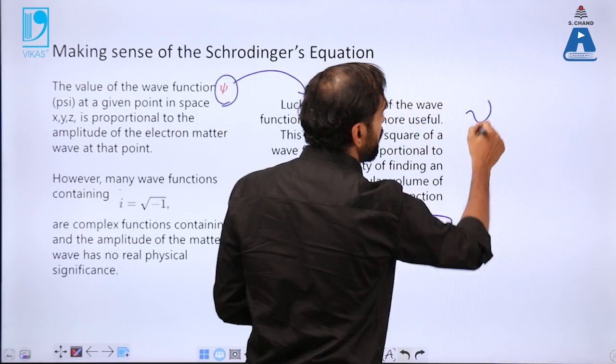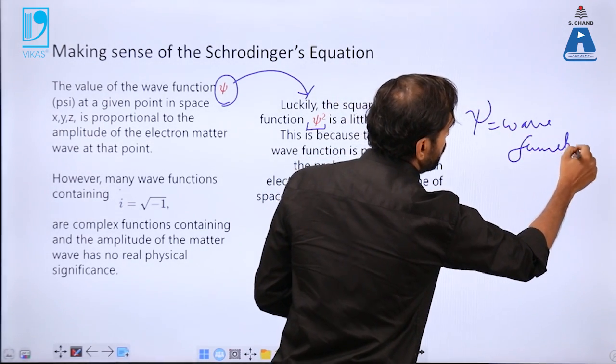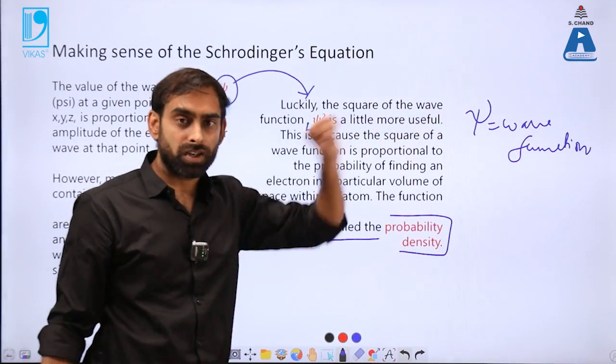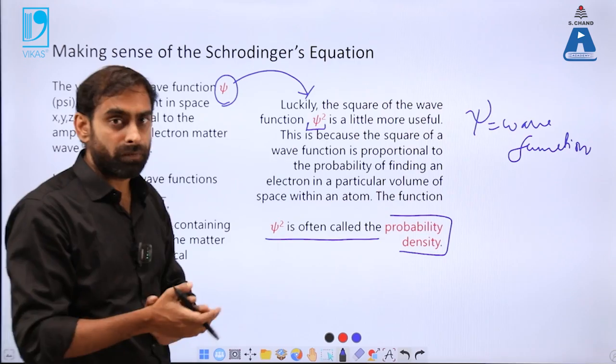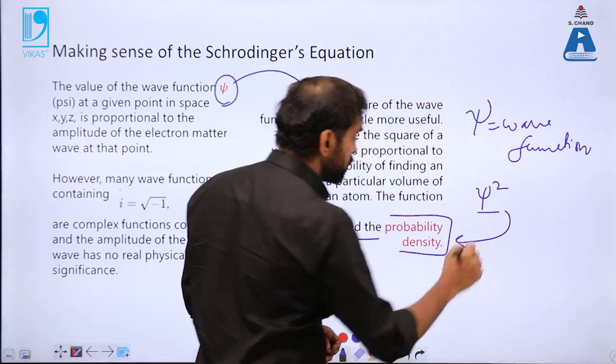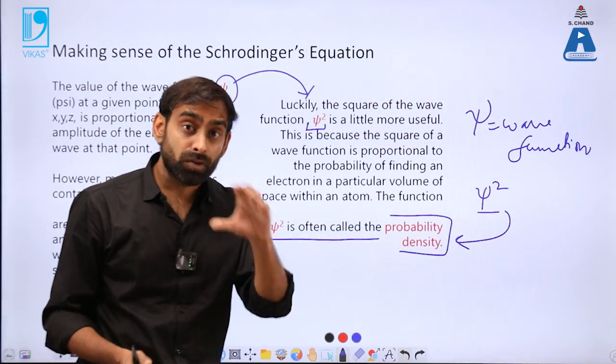Squared wave function became more useful to explain the geometry or shape of electron cloud, and that was defined as probability density. Whereas ψ is just wave function, which was a kind of mathematical function alone and doesn't give much information about the realistic shape of electron cloud, the squared value of ψ was much more meaningful and it provided the probability density.